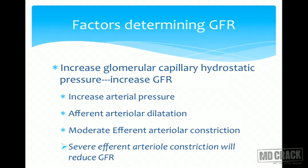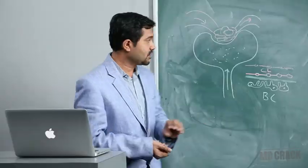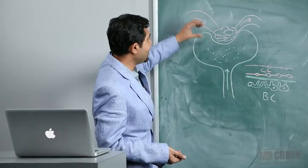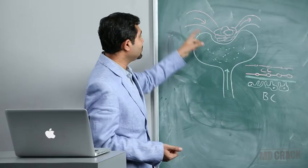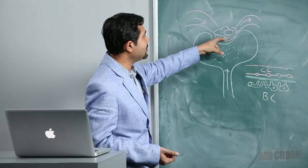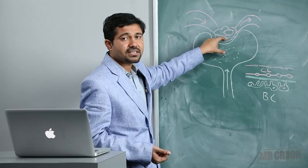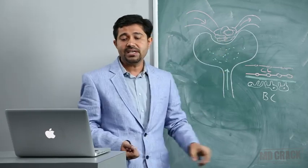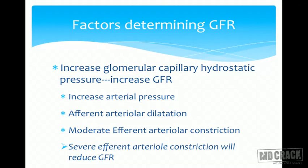Increased glomerular capillary hydrostatic pressure increases GFR. If the afferent arterioles dilate, more fluid flows into the glomerular capillaries, hydrostatic pressure increases, and filtration increases. This can occur with increased arterial pressure or afferent arteriolar dilation. Moderate efferent arteriolar constriction also increases GFR.